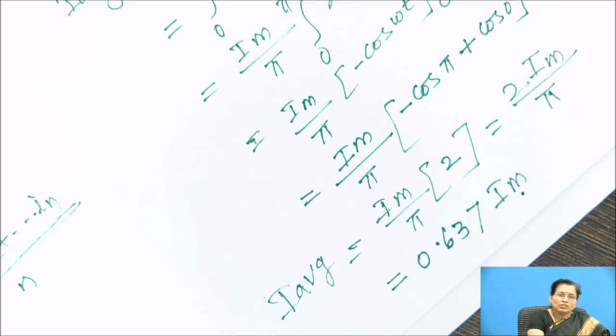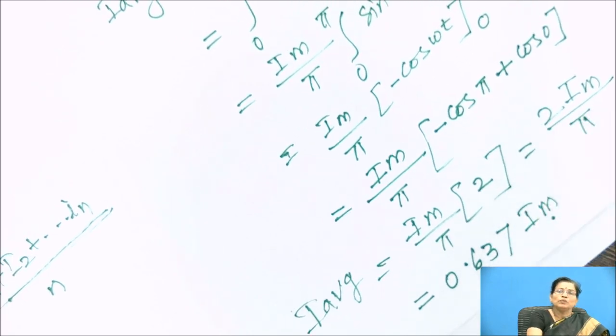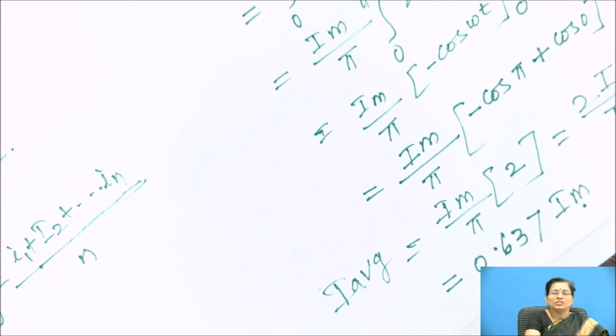Now what is the importance of this average value here? When we convert the AC voltage to DC by using rectifiers, we have to consider this average value. This average value is nothing but the DC value of the AC cycle.